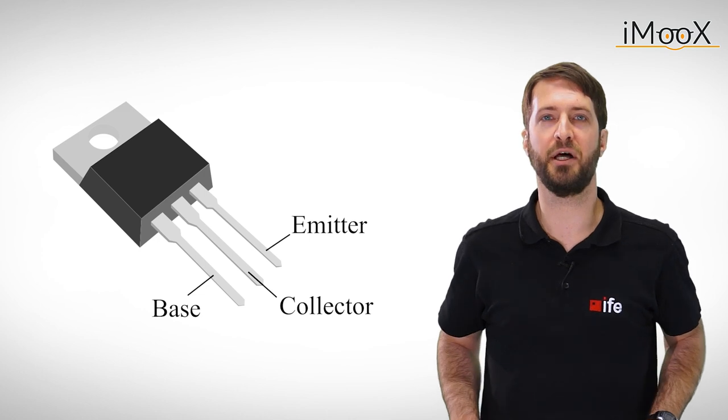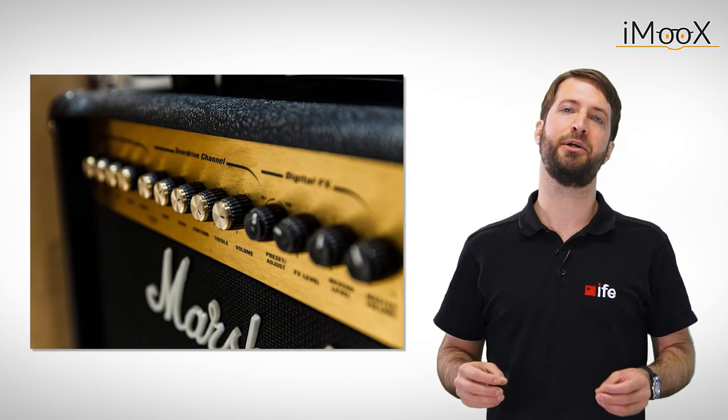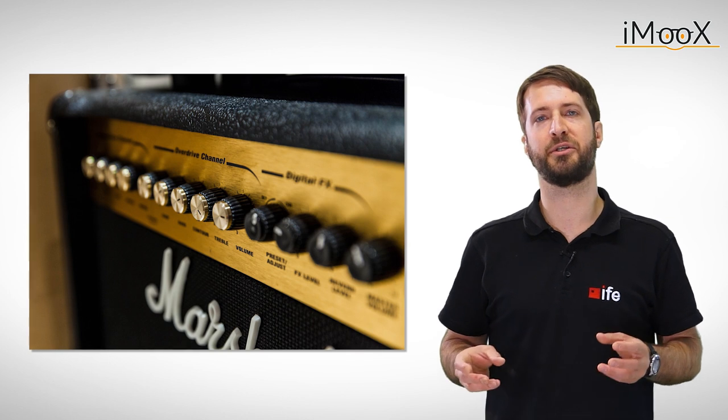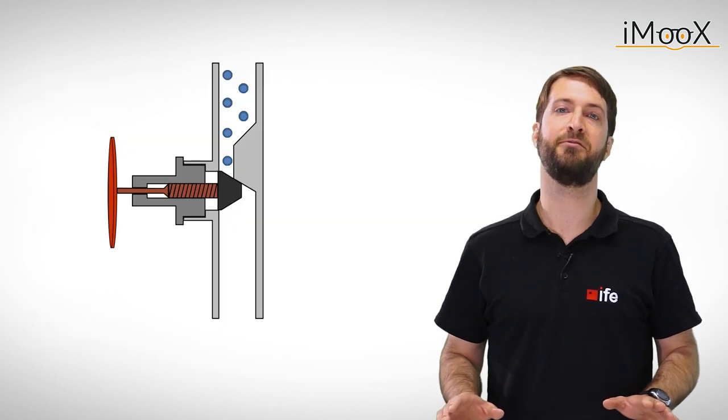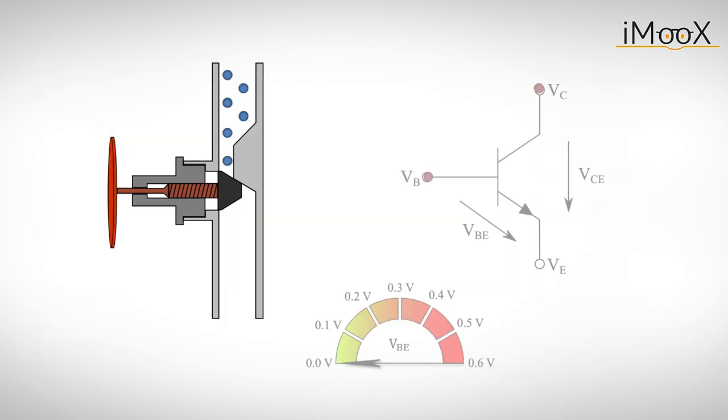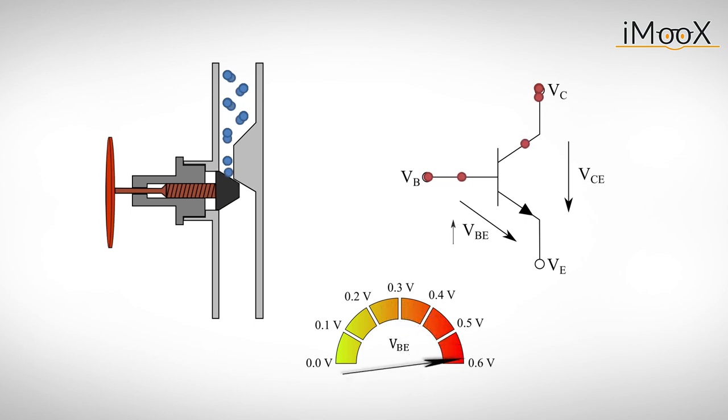Notice that the transistor does not actively amplify the current by itself but solely controls a current that is provided by a power source. You can imagine the transistor as a valve of a pipeline. The base current simply acts as the handle of the valve, which controls the flow through the pipeline. As the base emitter voltage rises nothing happens at first until the forward voltage drop of the base emitter diode is reached. At this point the valve opens and a large current can flow. When the base voltage is decreased below the bias voltage of approximately 0.6V the current flow will stop.